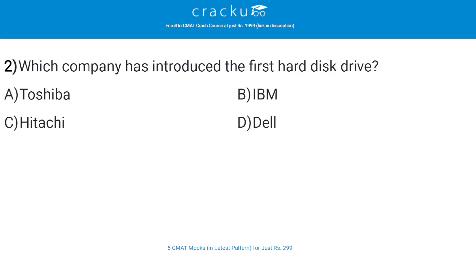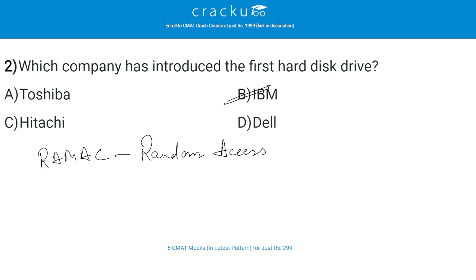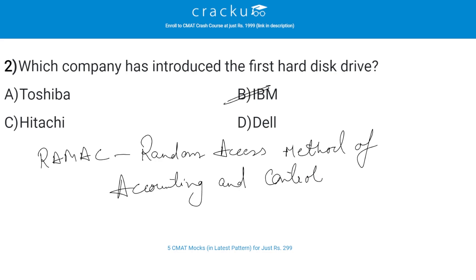Which company introduced the first hard disk drive? The correct answer is B, IBM. IBM made the first commercial hard disk drive based computer and called it RAMAC. The full form of RAMAC is Random Access Method of Accounting and Control. Its storage system was called IBM 350.